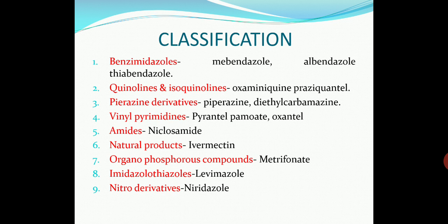Coming to the classification of anthelmintics: the first category is benzimidazoles — examples are mebendazole, albendazole, thiabendazole; quinolones and isoquinolones, that is oxamniquine and praziquantel; pyrazine derivatives, that is piperazine and diethylcarbamazine; vinyl pyrimidines, that is pyrantel pamoate; oxantel amides, that is niclosamide; natural products like ivermectin; organophosphorus compounds, that is metrifonate; imidazole thiazoles, that is levamisole; and nitro derivatives like niridazole. This classification is taken from KD Tripathi, sixth edition.